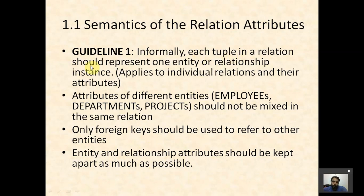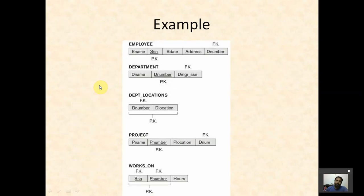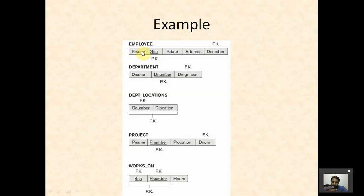Informally, each tuple in a relation should represent one entity or relationship instance — it applies to individual relations and their attributes. For example, in the company database, the employee table attributes belong to the employee type only: Ename, SSN, birth date, address all belong to a particular employee. We use a foreign key Dnumber to refer to the department. The employee table should contain only employee attributes and the department table only department attributes.